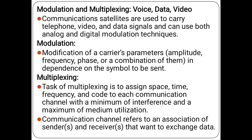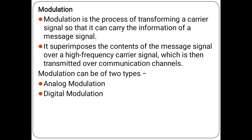Modulation is the modification of the carrier parameter — amplitude, frequency, phase, or a combination of them — in dependence of the symbol to be sent. Multiplexing is the task of assigning space, time, frequency and code to each communication channel with a minimum of interference and a maximum of media utilization. A communication channel refers to the association of sender and receiver that want to exchange data.